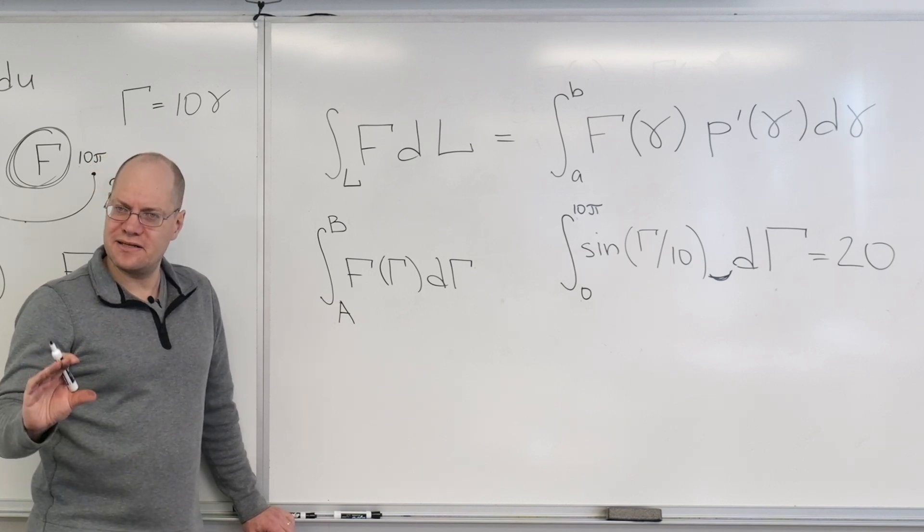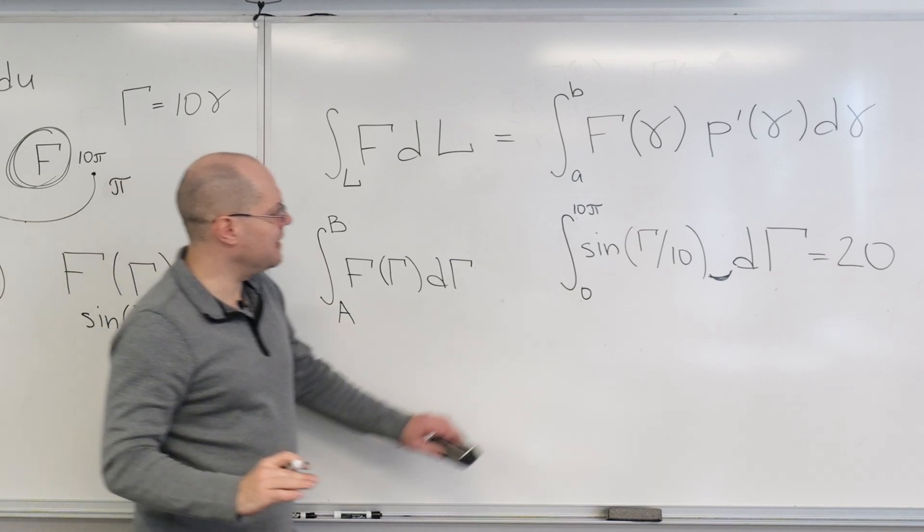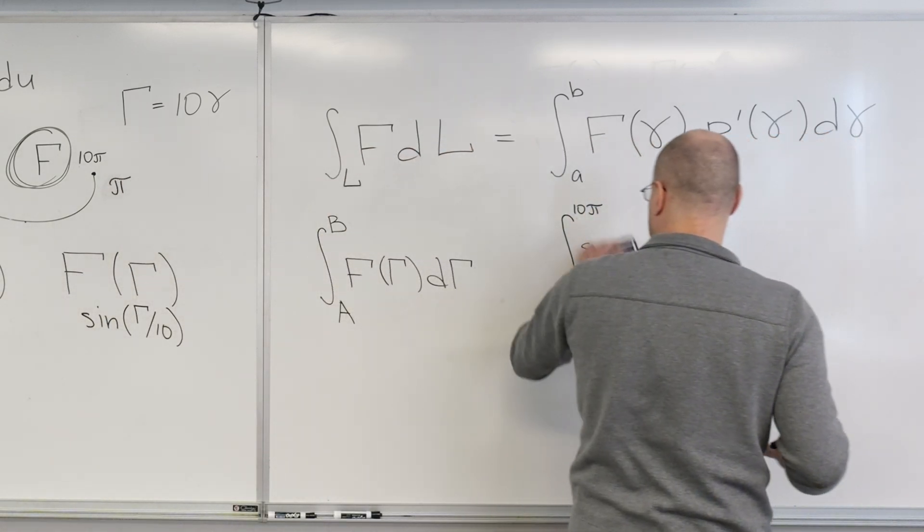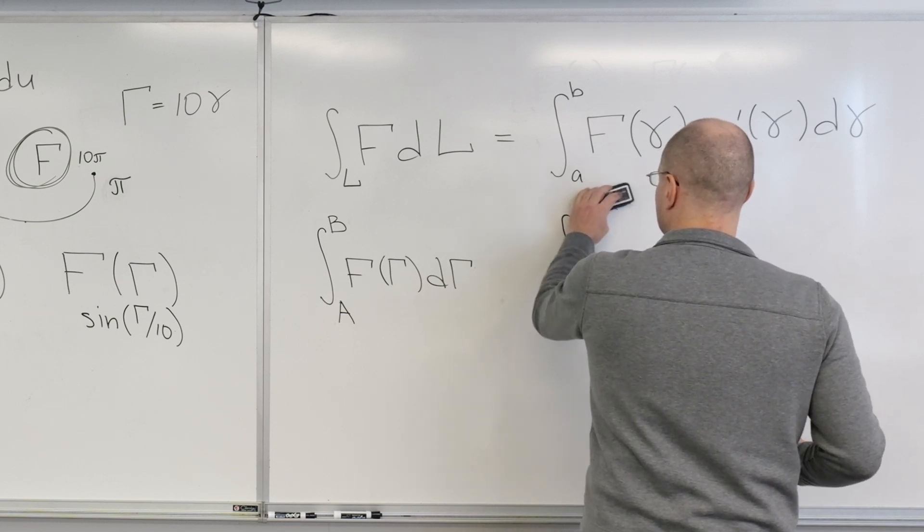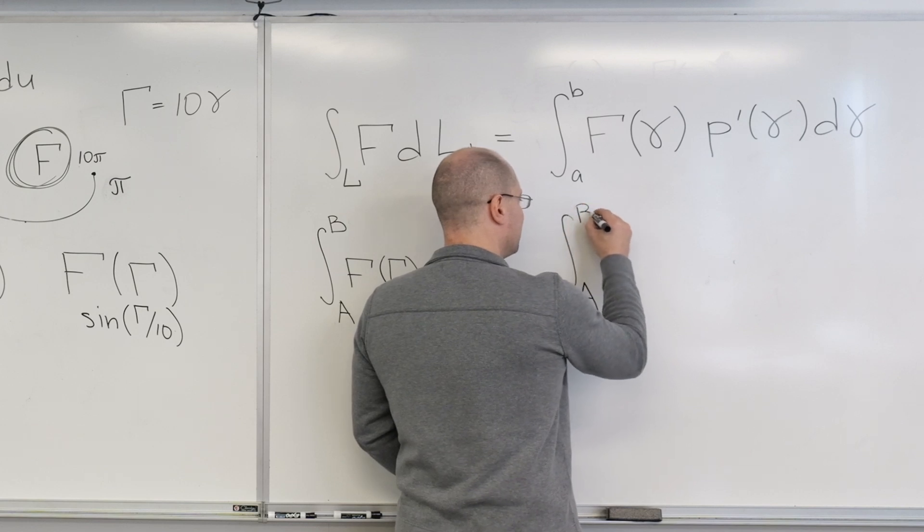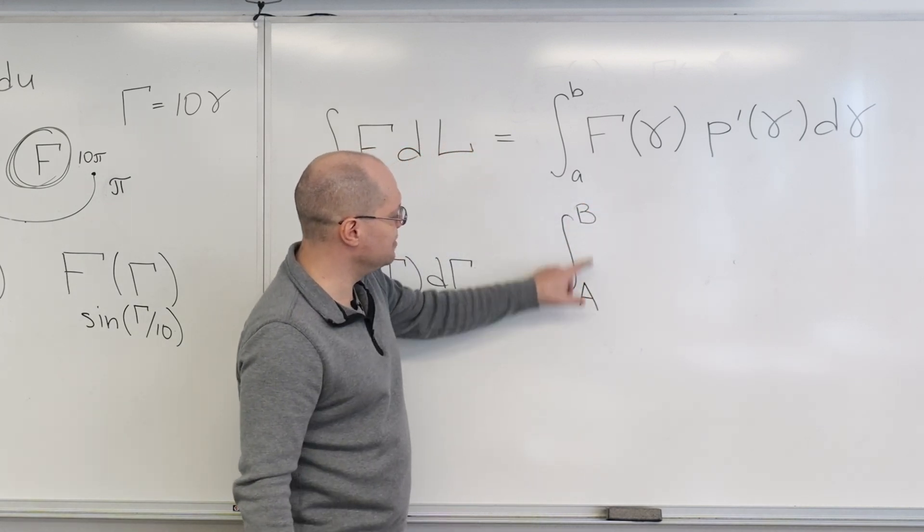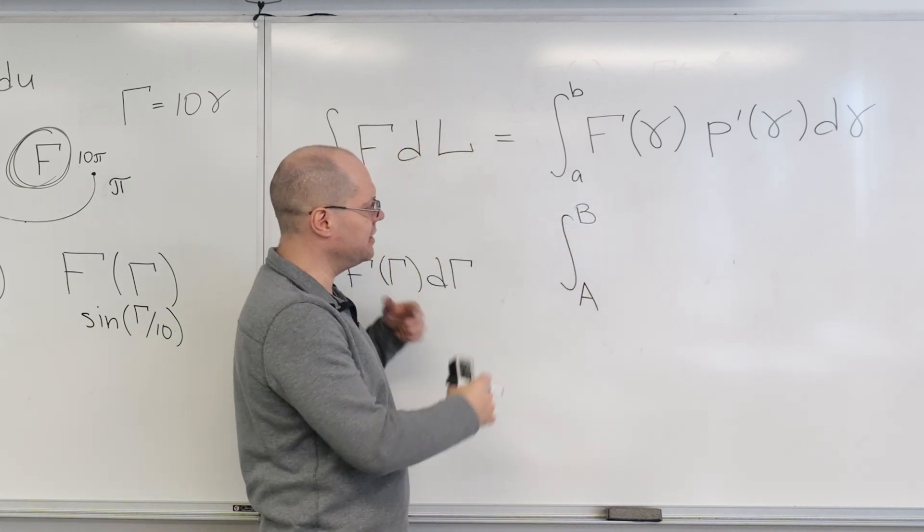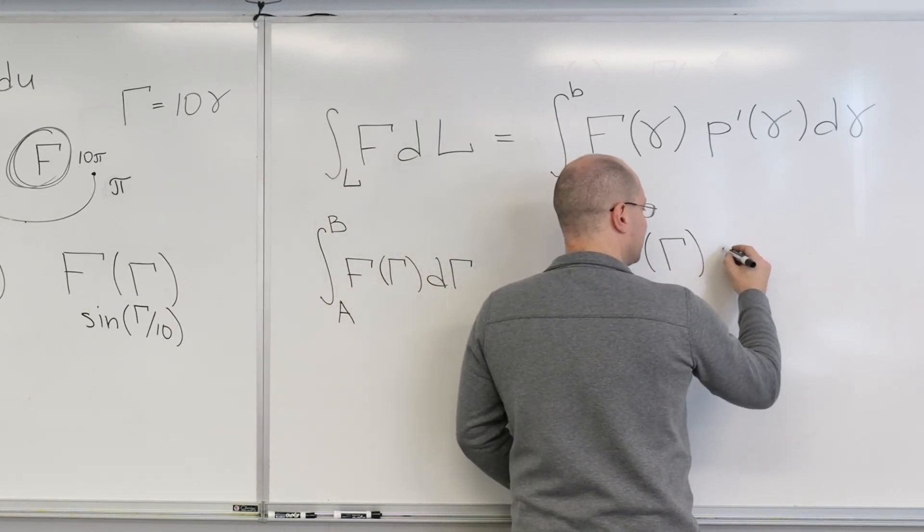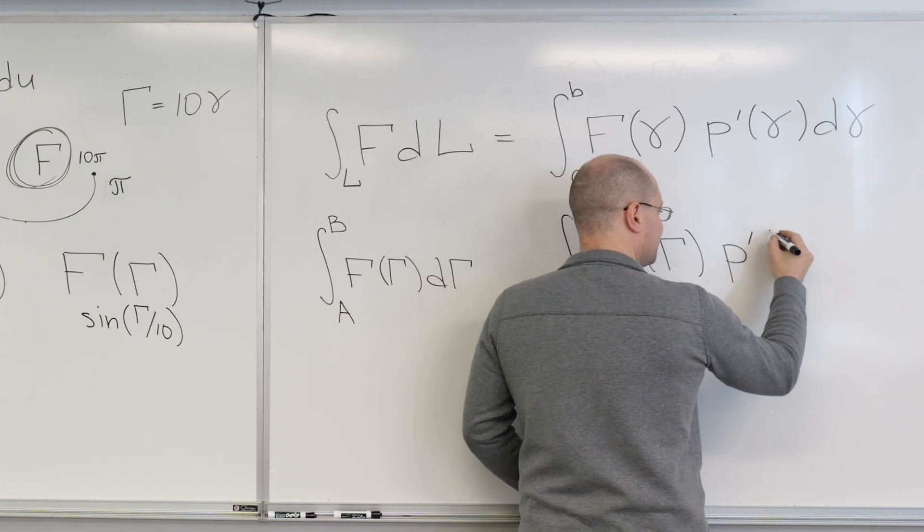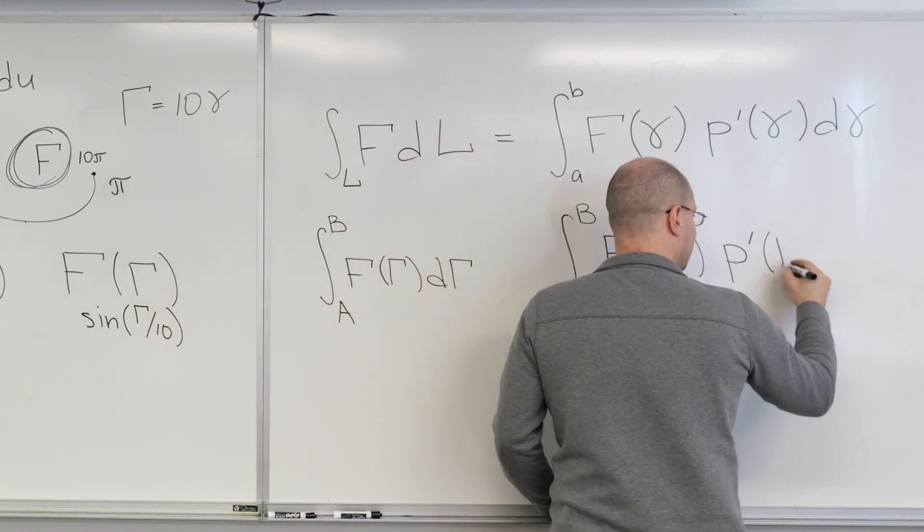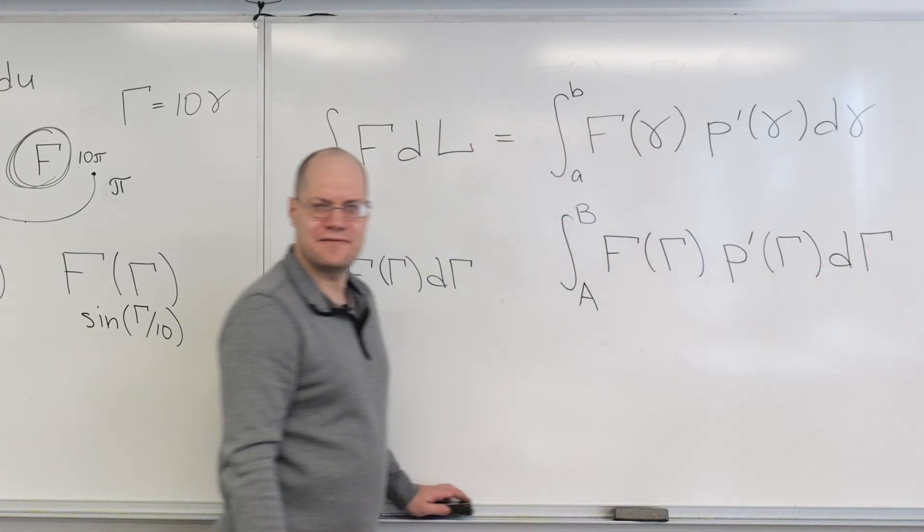It fixes it in the sense that if I do the same thing in the alternative parameterization. So now I will go from capital A to capital B. In other words, the limits of integration will correspond to the range of the new parameter, capital gamma. And then here I will have to put in the derivative. That's the key. That it's not p of gamma. It's the derivative.